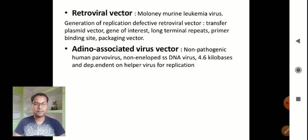Retroviral vector: Moloney murine leukemia virus. Generation of replication defective retroviral vector includes transfer plasmid vector, gene of interest, long terminal repeats, primer binding site, and packaging vector.